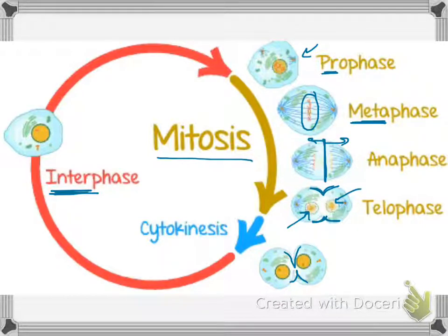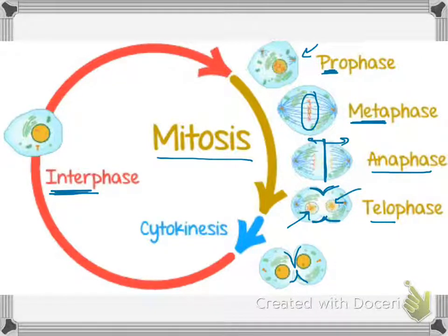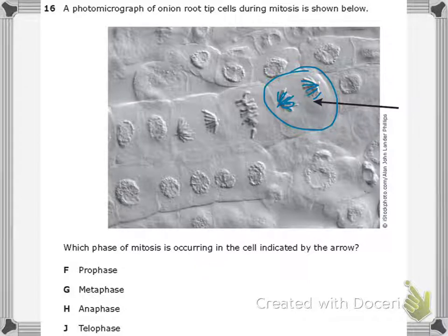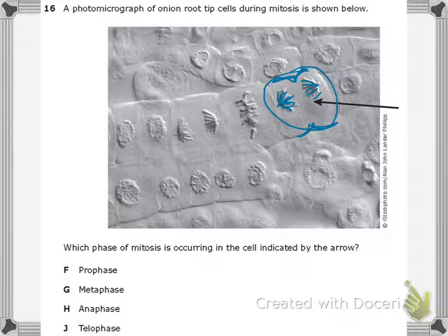Knowing what we know now: prophase is where it prepares to divide, metaphase is where chromosomes line up in the middle, anaphase is where they split to the two sides, and telophase is where they start to divide. Looking back at our picture, it doesn't look like it's preparing, and the chromosomes have been pulled apart but are not in the middle. I don't see any cytokinesis starting, so this must be in anaphase. H is our correct answer for number 16.